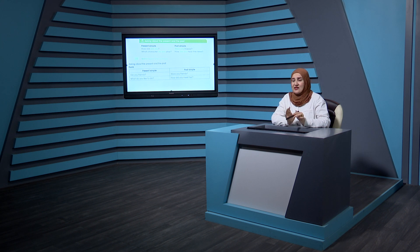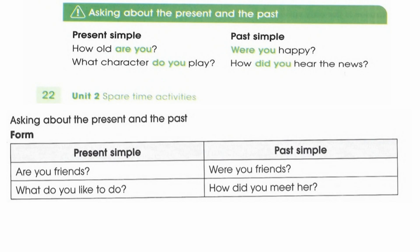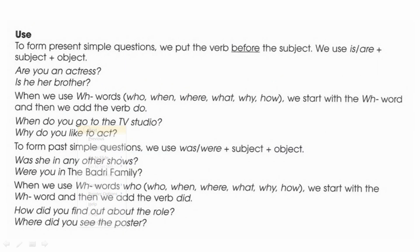In questions, always put the auxiliary verb before the subject. If using 'was/were' or 'is/am,' place them before the subject too. Present simple examples: 'Are you friends?' — 'are' comes before the subject. 'Were you friends?' — past form. 'What did you like to do?' 'How did you meet her?' — here 'do' indicates present and 'did' indicates past. We've previously explained how to distinguish between present simple and past simple.